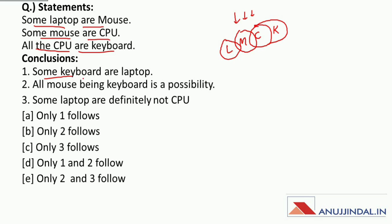Now let's move on to the conclusion. Conclusion number 1 is: some keyboard are laptop. So guys, between keyboard and laptop there is no direct information. We have learned that if there is no information given between any two elements, then all the possible conclusions will be true and all the definite conclusions will be false. So this conclusion number 1 is a definite conclusion.